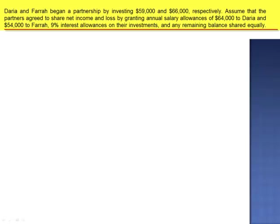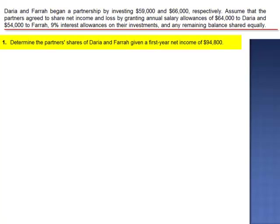Exercise 6. Daria and Farah began a partnership by investing $59,000 and $66,000 respectively. The partners agree to share net income and loss by granting annual salary allowances of $64,000 to Daria and $54,000 to Farah, 9% interest allowances on their investments, and any remaining balance shared equally. Requirement 1 asks us to determine the partner's shares given a first-year net income of $94,800.